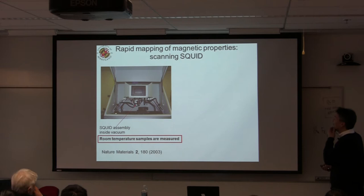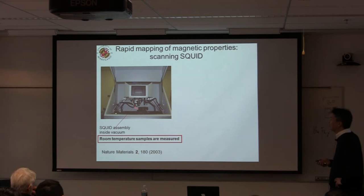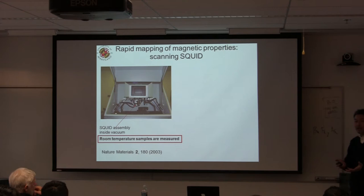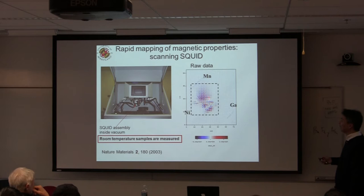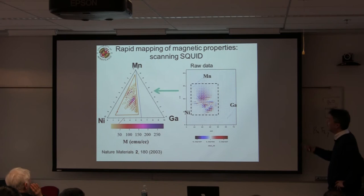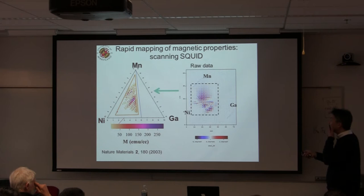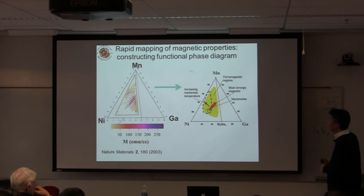Now I'll talk about samarium hexaboride, an important Kondo topological insulator. There's been lots of fantastic single crystal work, but almost no thin film work. Thin films are needed if you want to probe interesting topological properties, make devices, Josephson junctions, etc. The problem is that boron and samarium have such different ionic masses that it's really difficult to control stoichiometry for uniform films. So we turned to the composition spread technique.